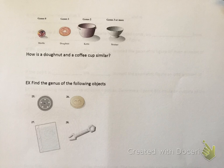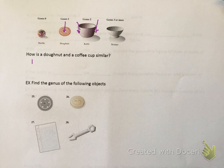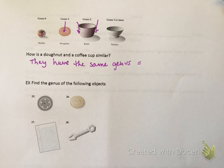Genus one is a donut because it has one through hole. Genus two is a kettle because it has two through holes on its handles. Genus three or more would be a strainer, which has several holes through it. So how are a donut and a coffee cup similar? They have the same genus — both equal one — because a donut has one through hole, and a coffee cup also has one through hole through its handle.